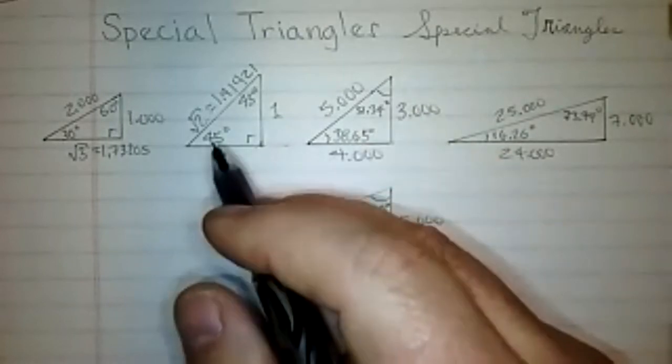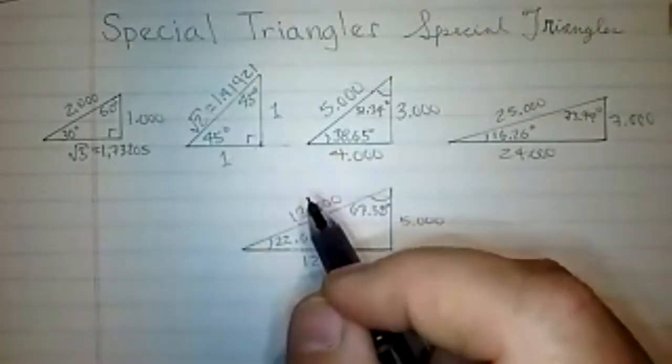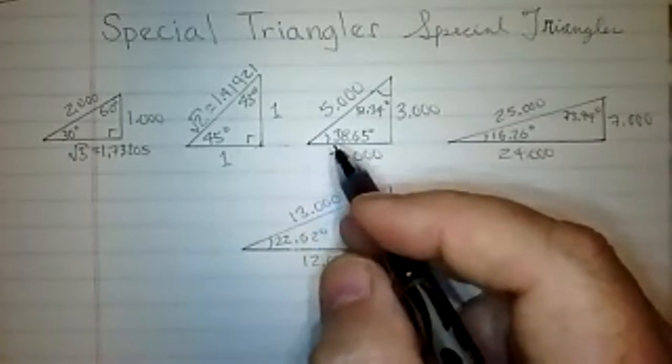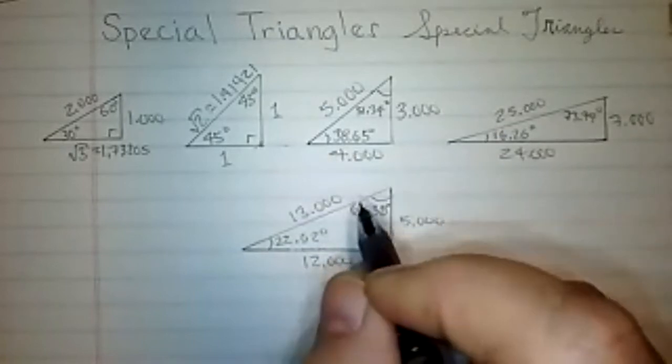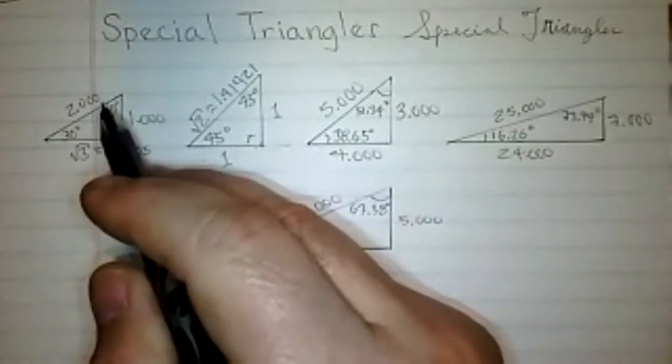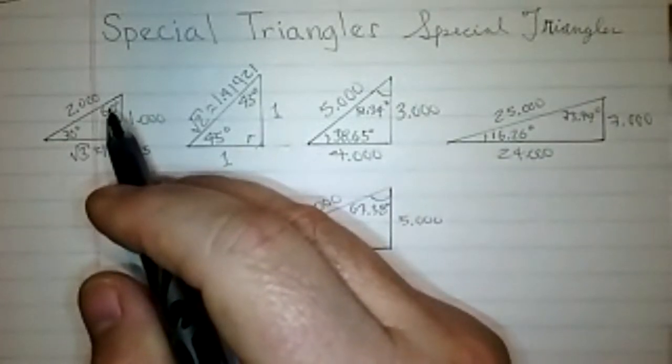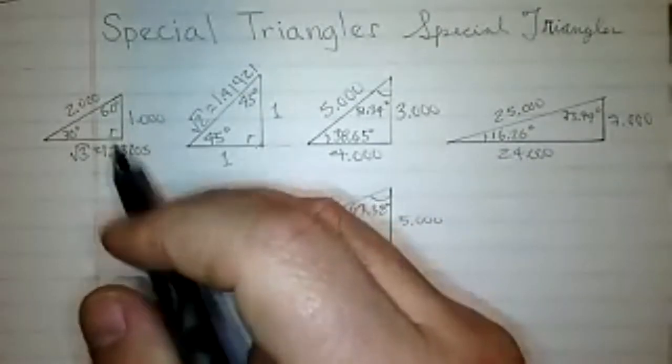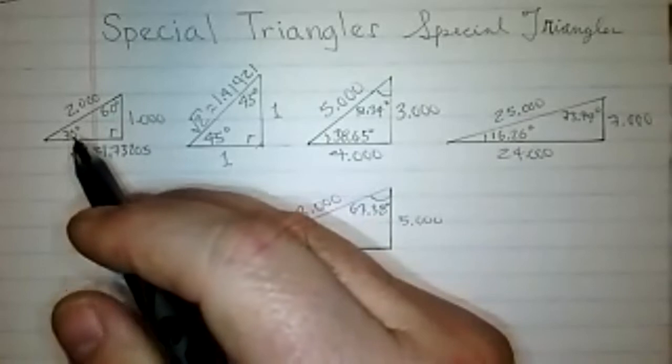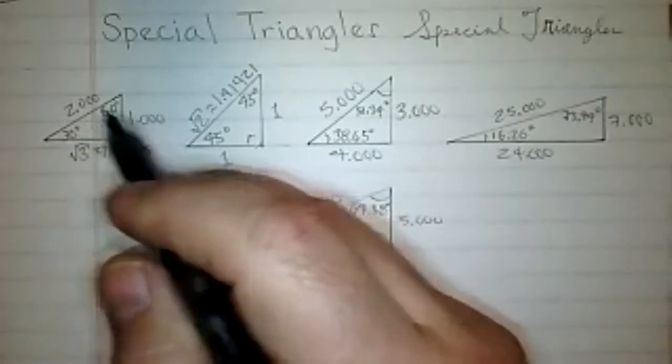Also, the sine of 45, which is opposite over hypotenuse is exactly the same thing. And you can see that that is obviously one over the square of two. Again, that's about 0.707, if I remember correctly. Also from this other one, not only did you get the 30 degrees, you also got the 60 degrees. So the sine of 60 degrees is root three over two. The cosine of 60 degrees is one half. You can also see that the sine of 30 degrees is one half.